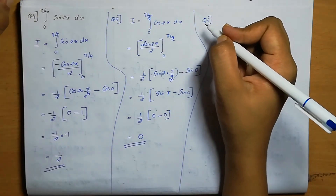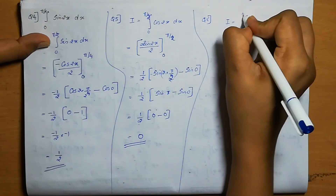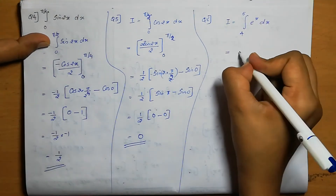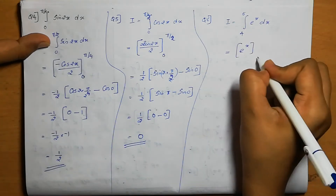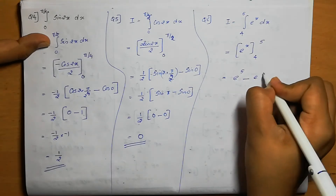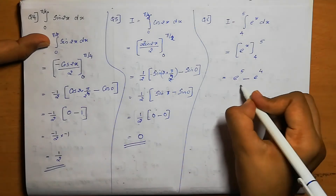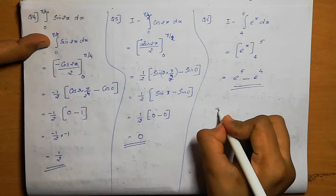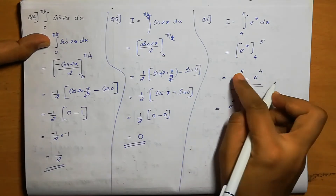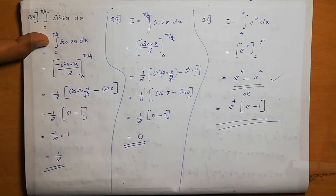Question number 6. Integral 4 to 5 of e raise to x dx. I equals integral 4 to 5 of e raise to x dx. The integral of e raise to x is e raise to x only. So e raise to x within the limit 4 to 5. Applying upper limit minus lower limit: e raise to 5 minus e raise to 4. We can take e raise to 4 common, leaving e minus 1. So the answer is e raise to 4 into (e minus 1).